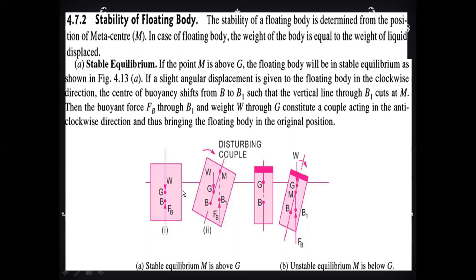If a slight angular displacement is given to the floating body in the clockwise direction, then the center of buoyancy shifts from point B to point B1, such that the vertical line through B1 cuts at point M. Then the buoyancy force FB through B1 and weight W through G constitute a couple acting in the anticlockwise direction, thus bringing the floating body back to its original position.